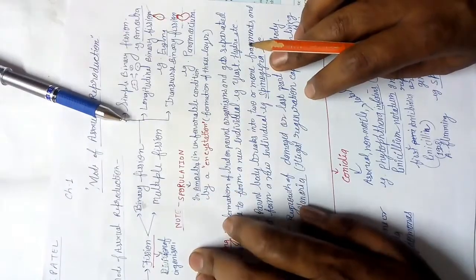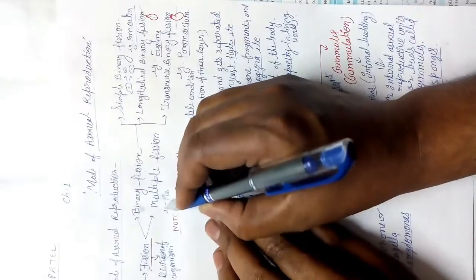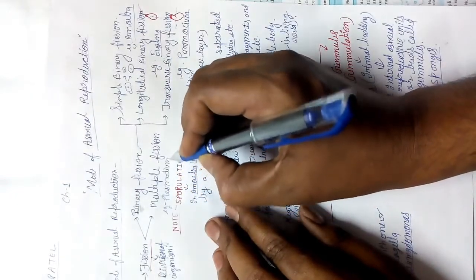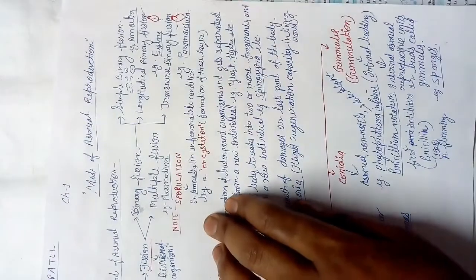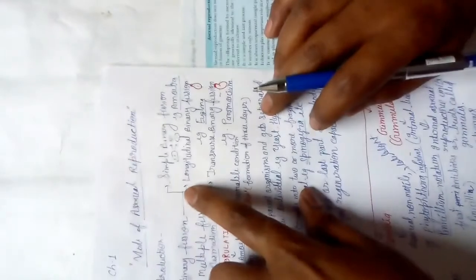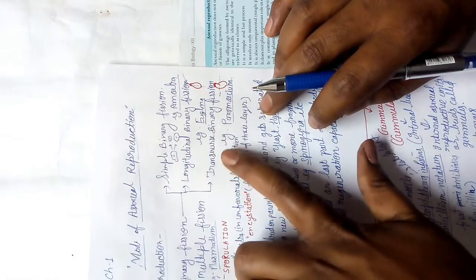An example of multiple fission is Plasmodium. Binary fission is further subdivided into three parts: simple binary fission, longitudinal binary fission, and transverse binary fission.